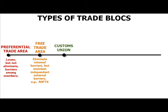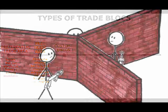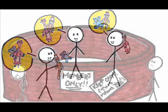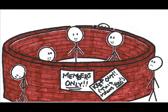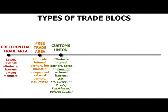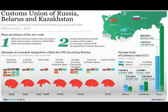The third type of trade bloc is a customs union, where member countries not only eliminate internal trade barriers, but they also adopt common policies for trade barriers on any non-members. For example, Russia, Kazakhstan, and Belarus formed a customs union in 2010. Those countries are eliminating trade barriers among themselves, but would agree to some common set of trade standards on anyone who's not in their group.